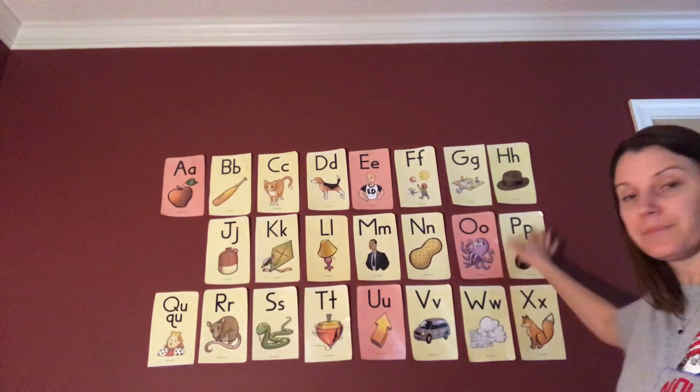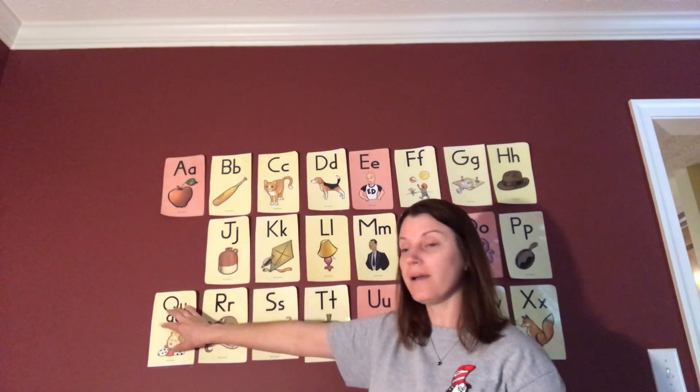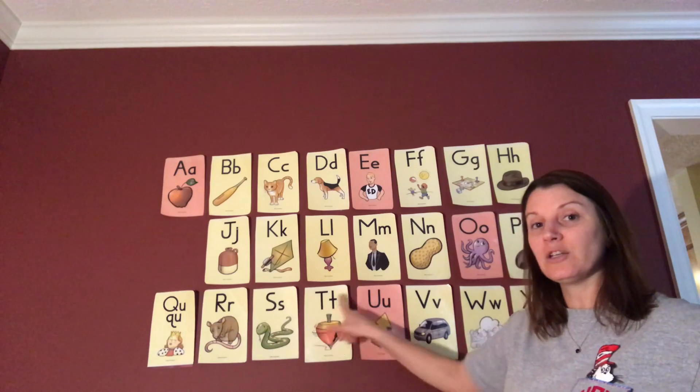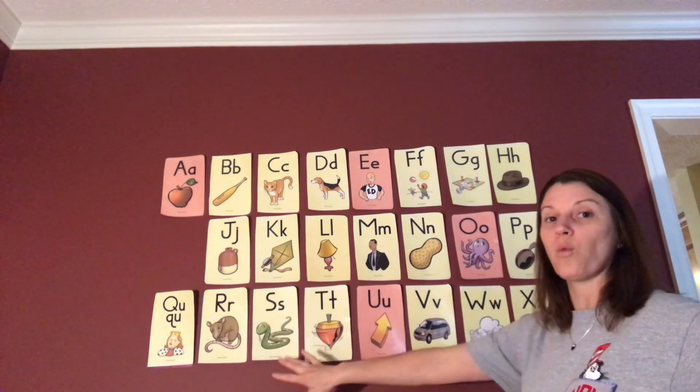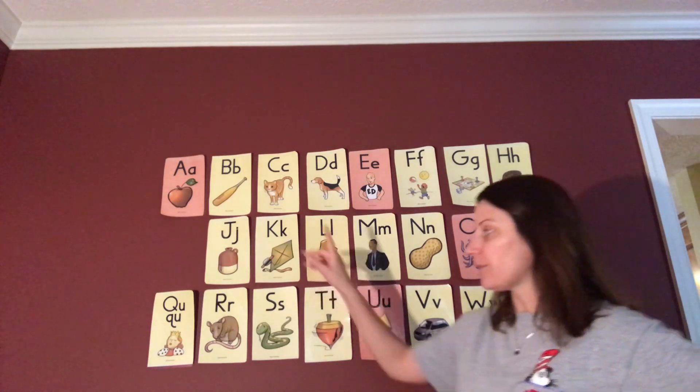So we had P, now we have Q, which says Q, and then R, S, T, U, V, W, X, Y, and Z are going to go right here at the bottom when we get to them. So we're going to start back up here with the letter A.